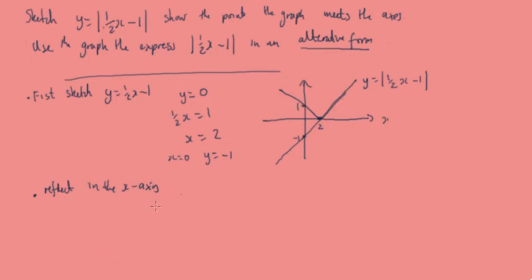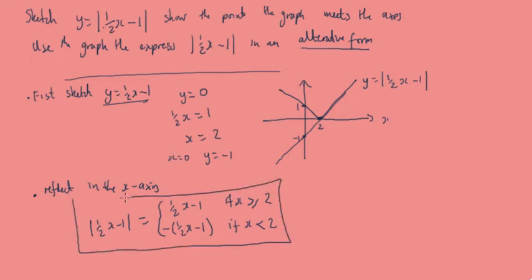Now we can see from the graph, a half x minus 1, the modulus, can equal, so if x is 2 or greater or the same as 2, it's just equal to half x minus 1 if x is greater than or the same as 2. But if x is less than 2, it comes up here. So it's going to be, you take the value of what it would have been if it was just y is a half x minus 1 and you find it's negative. So two negatives will be a positive. So this is the alternate form that we want to write in.